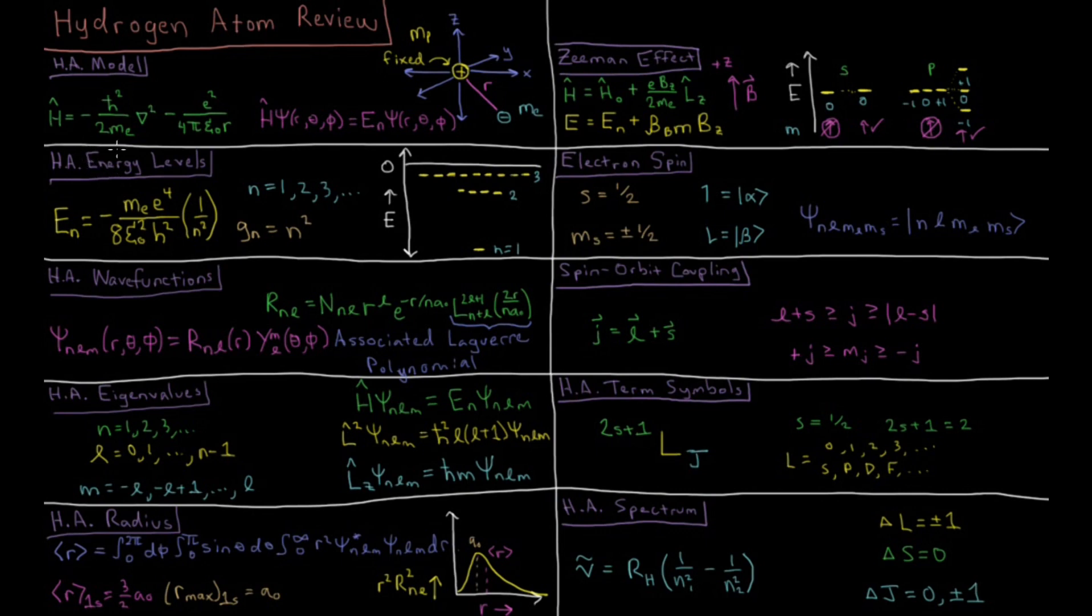The energy levels we get are exactly the same as from the Bohr model system. The energy depends on this negative constant times one over n squared, where n is an integer starting at one and going up.